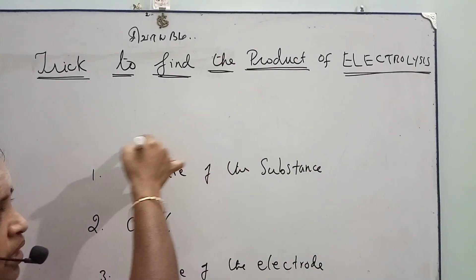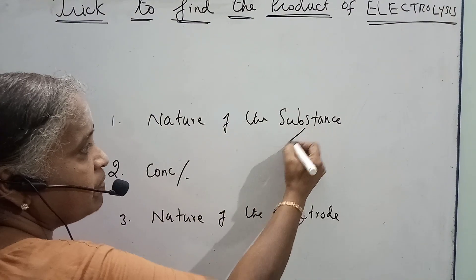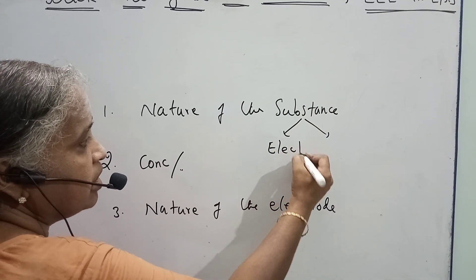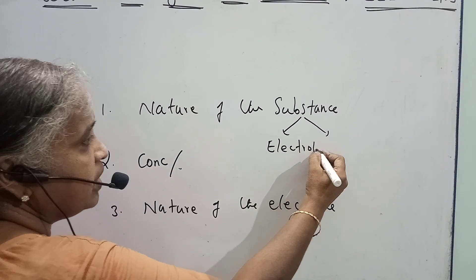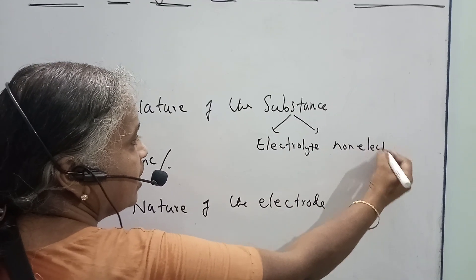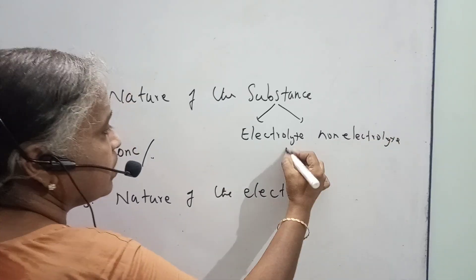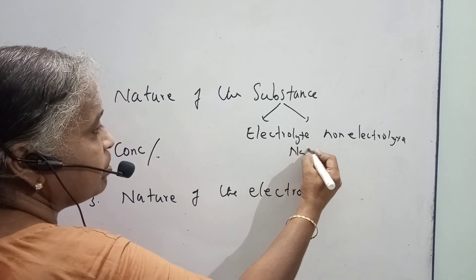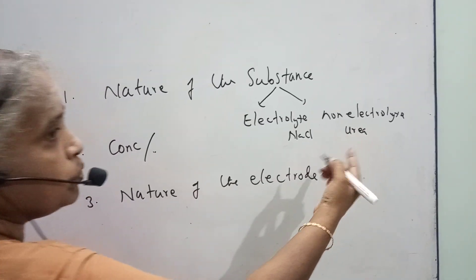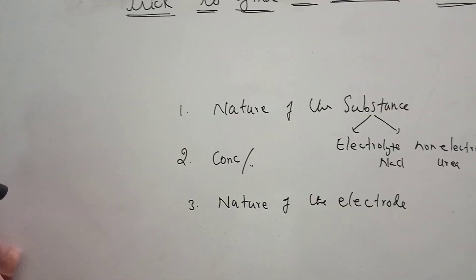During electrolysis, the products depend upon the nature of the substance — whether it is an electrolyte or non-electrolyte. This is a very important point. If it is an electrolyte, you can take sodium chloride as an example. Non-electrolyte means you can take urea, glucose, etc. So this is the first factor.